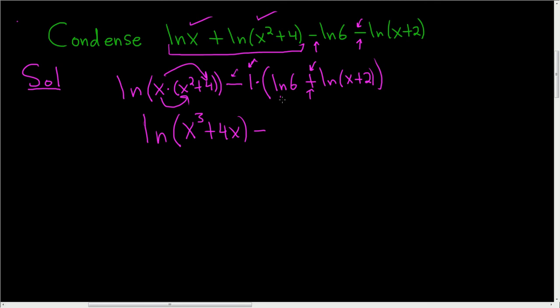Minus – now we'll use the product rule here. So this is the natural log of 6 times x plus 2. Boom, there it is.